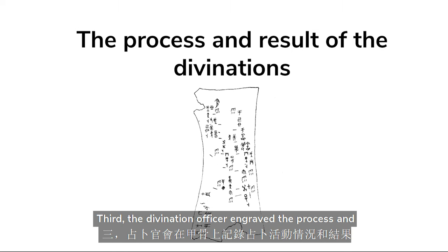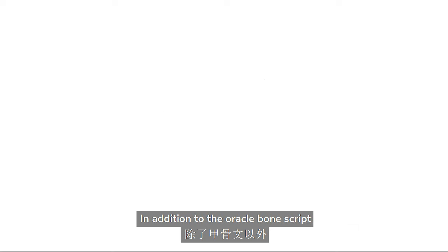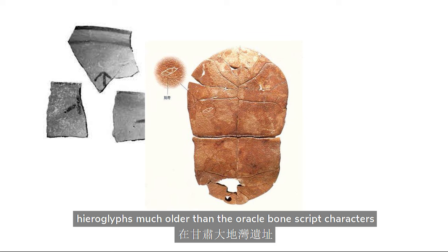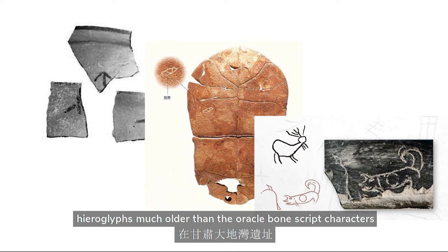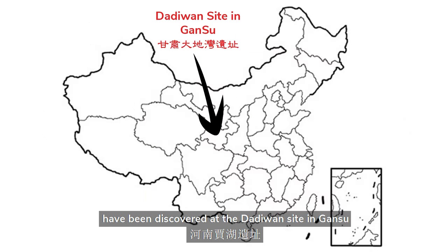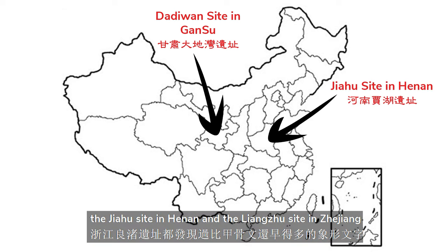Third, the divination officer engraved the process and result of the divination activity on the bone. Fourth, an oracle bone could be engraved with a calendar. In addition to the oracle bone script, hieroglyphs much older than oracle bone script characters have been discovered at the Da Di Wan sites in Gansu, the Jia Hu site in Henan, and the Liang Zhu site in Zhejiang.